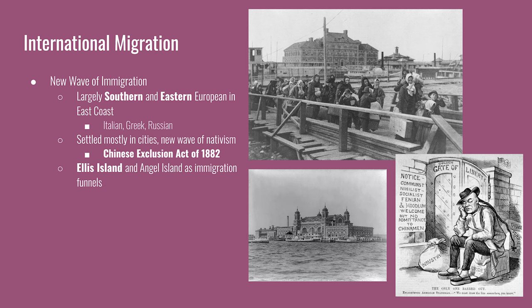Chinese migrants worked on railroads and mines on the West Coast, mostly traveling to the U.S. on a temporary basis with labor contracts spanning just a few years. They experienced nativism because they were perceived to be taking jobs away from white Americans. Californians lobbied the federal government, and in 1882 Congress passed the Chinese Exclusion Act, which barred any new migration from China and prohibited current Chinese migrants from becoming naturalized citizens. Ellis Island opened in 1892, and a similar processing center, Angel Island in the San Francisco Bay Area, opened in the next historical period.